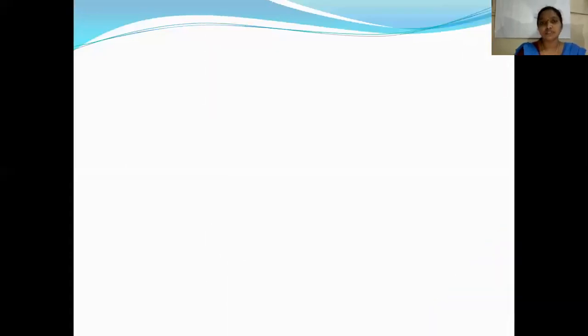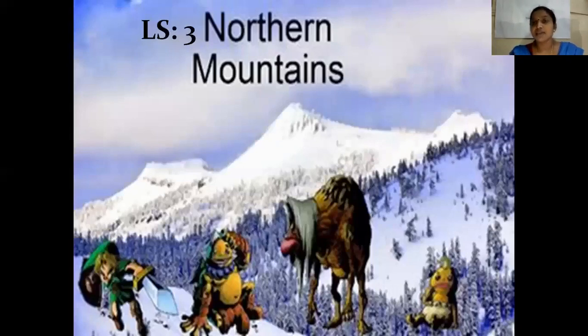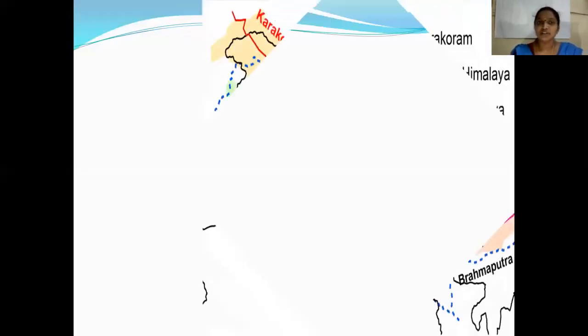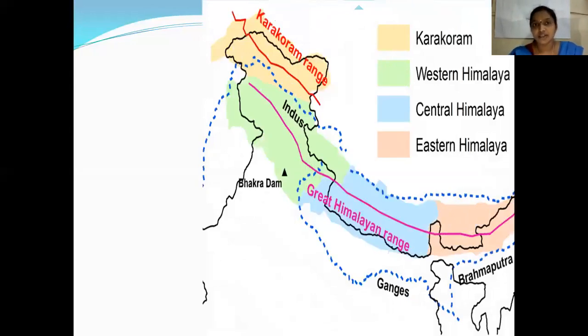Today we will be learning about one of the physical features in a very detailed manner. Our next lesson is the northern mountains. The northern mountains are also known as the highest mountains. Look at the northern mountains' location — that is from Jammu Kashmir to Arunachal Pradesh, the northern mountains are located.